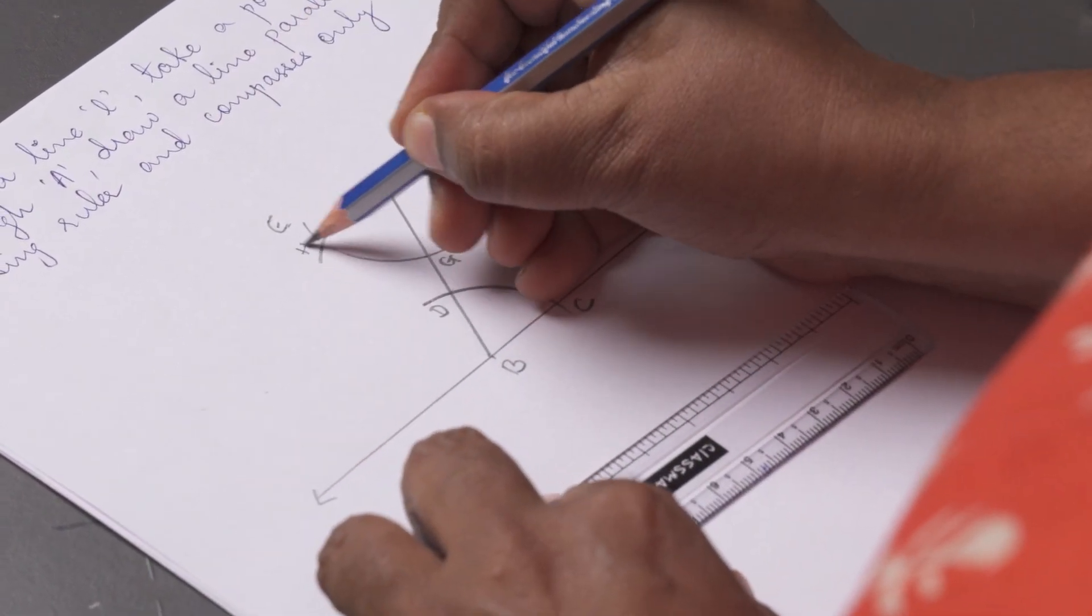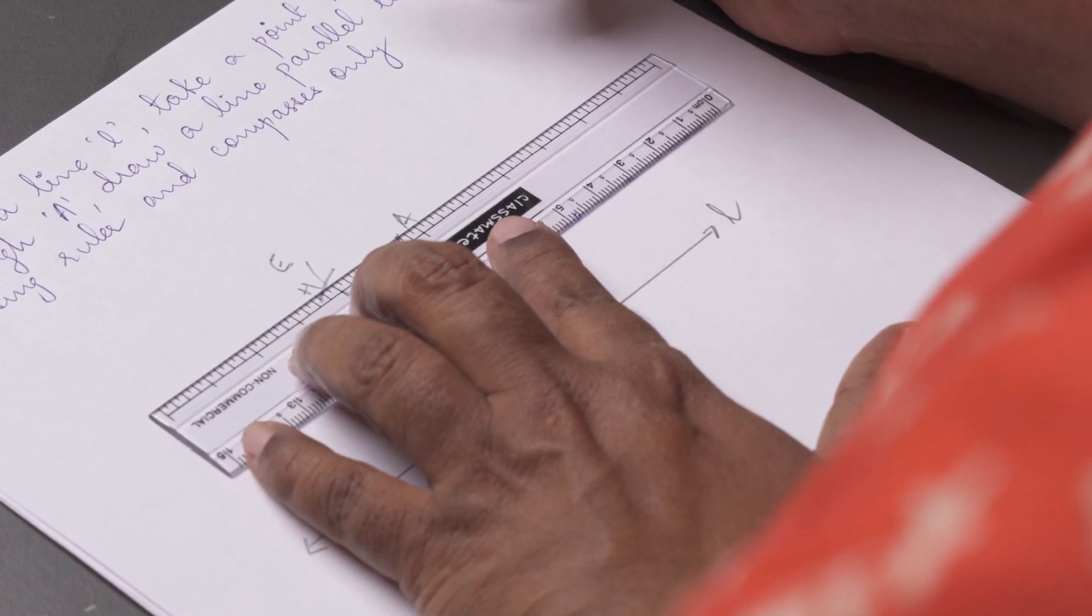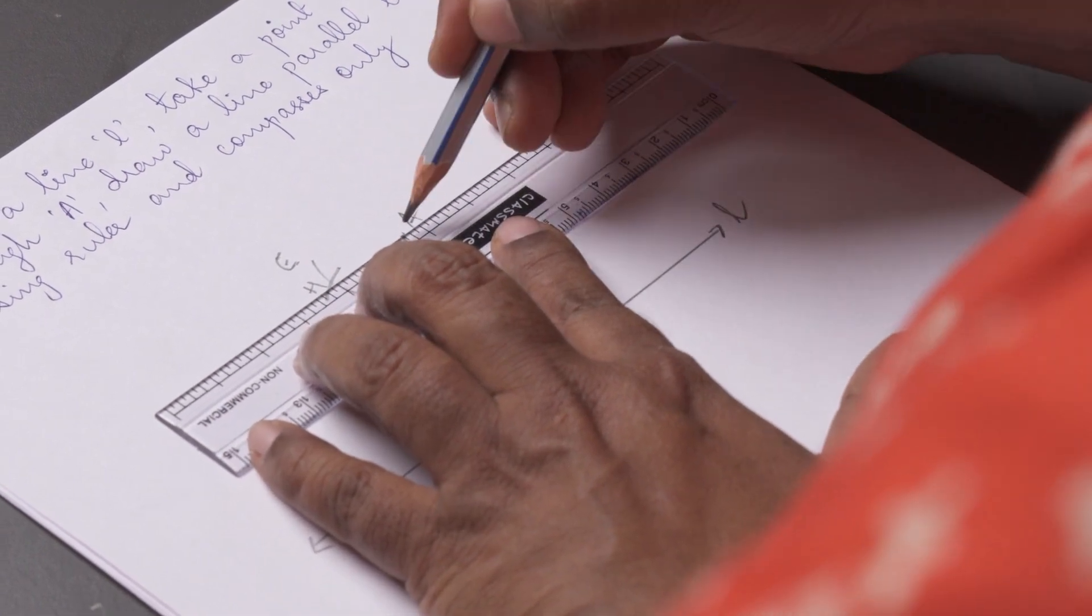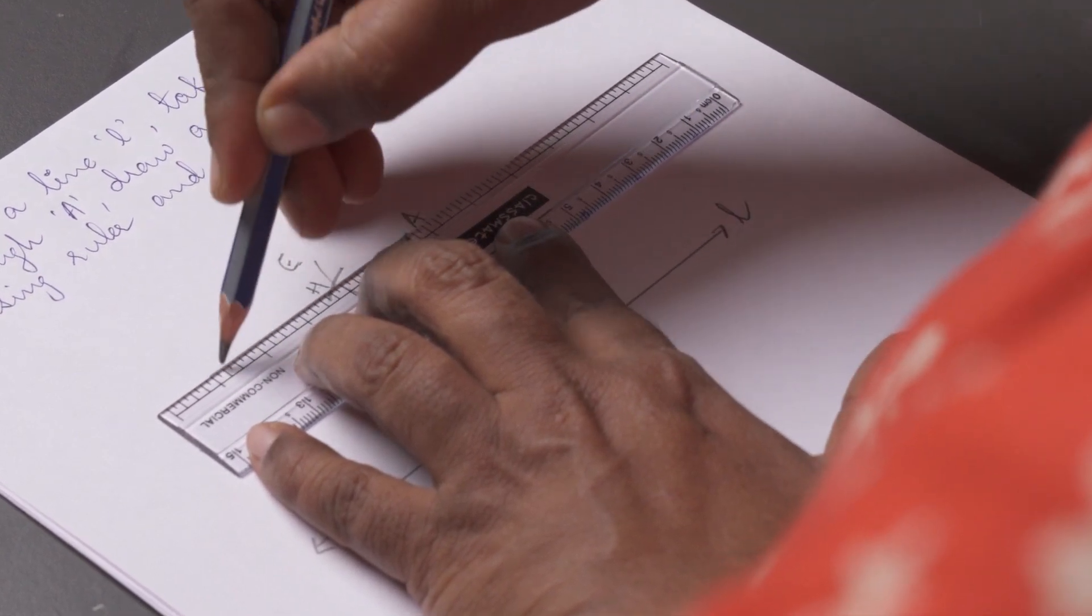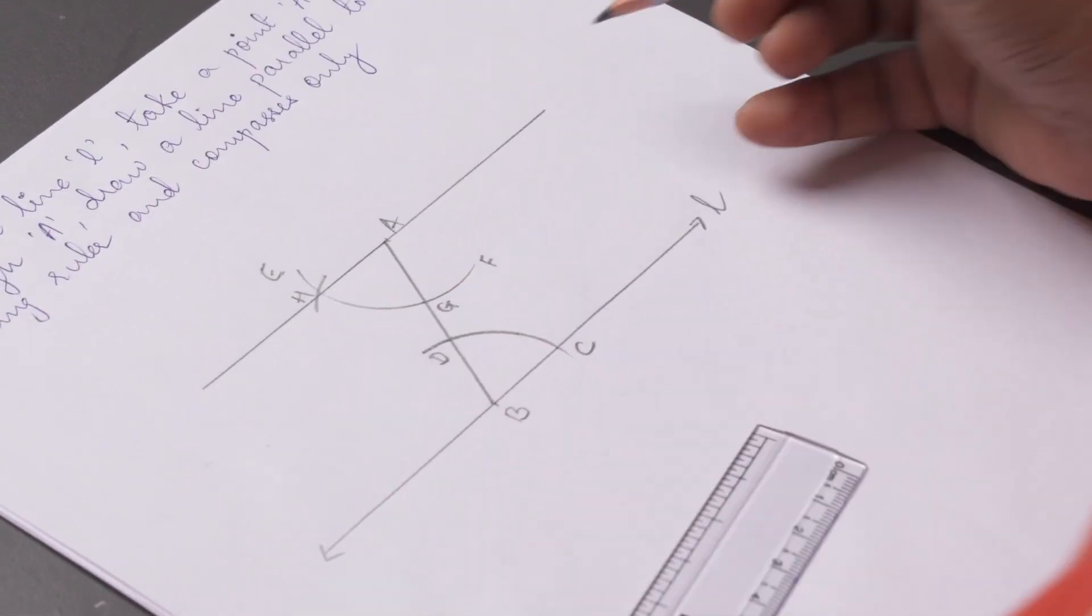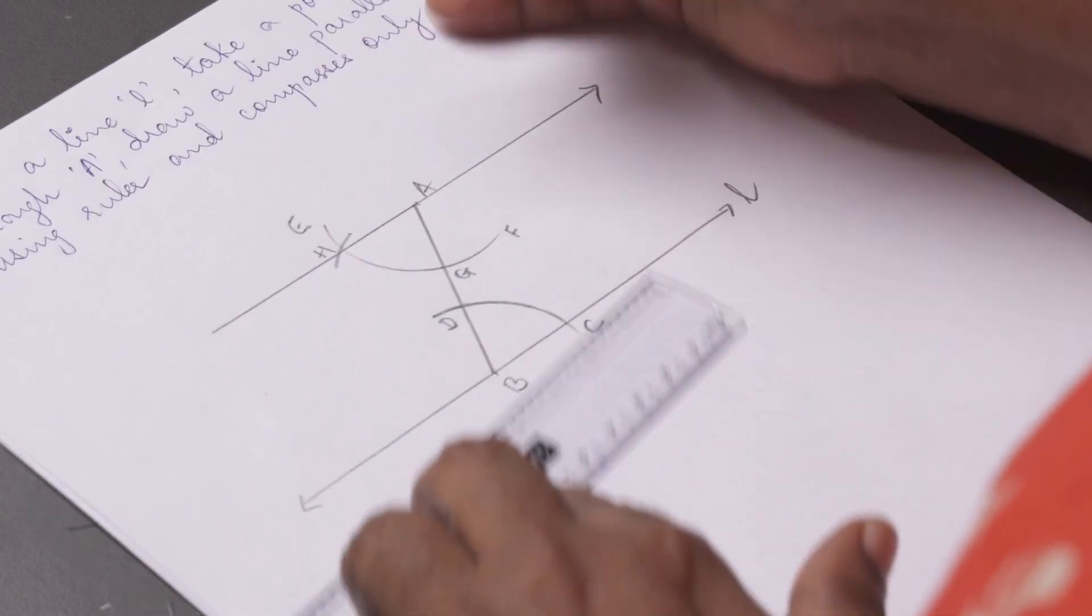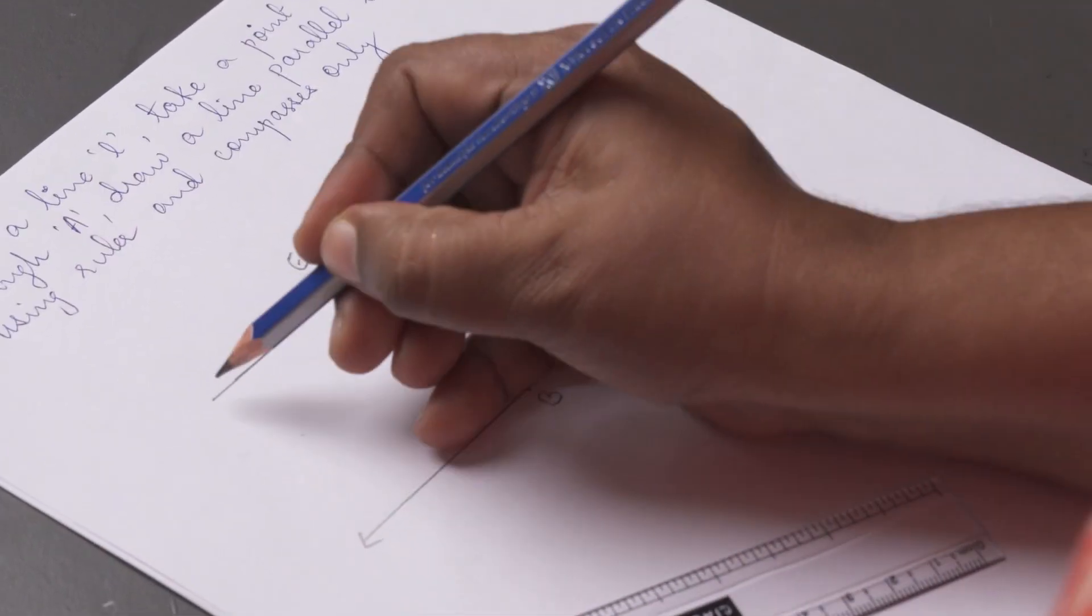Take a ruler, and join AH to draw a line M. Students, this is how you construct a line parallel to a given line, to a point not on the line.